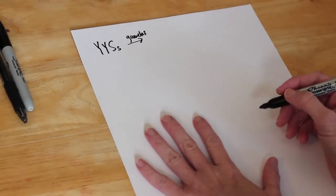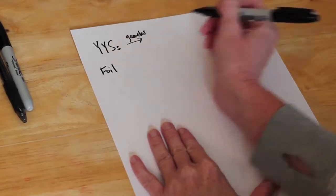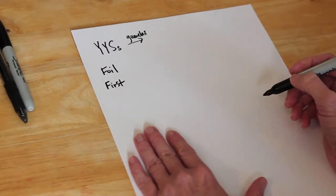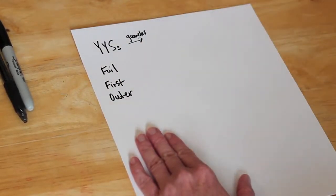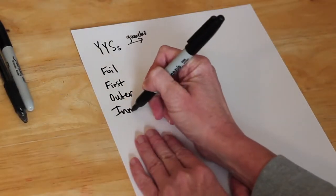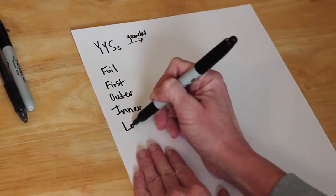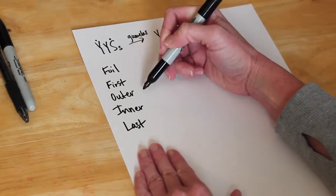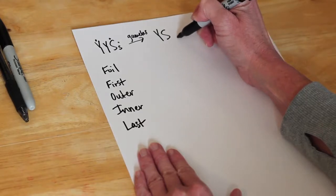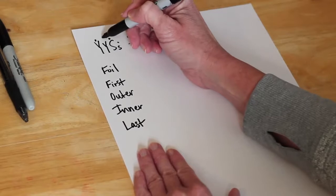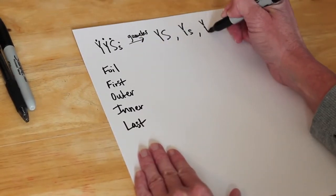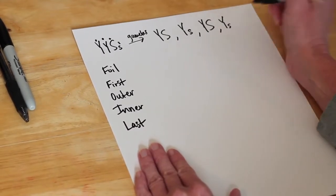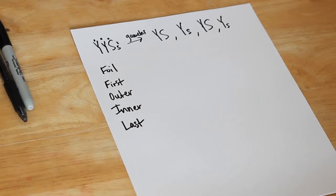For a two-trait cross, you can use a method called FOILing. F stands for First — take the first two alleles. O is Outer — take the outer two alleles. I is Inner — take the inner two alleles. L is Last. So: First gives big Y big S; Outer gives big Y little s; Inner gives big Y big S; and Last gives big Y little s. That's how you determine the gametes for a two-trait cross.